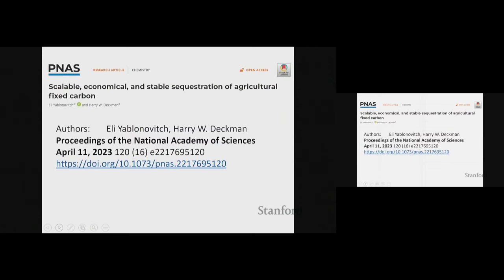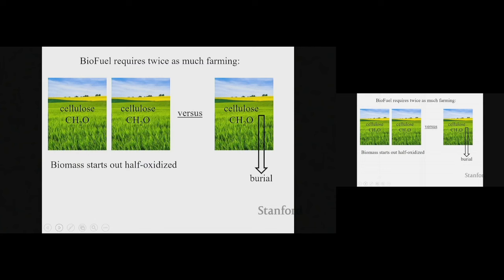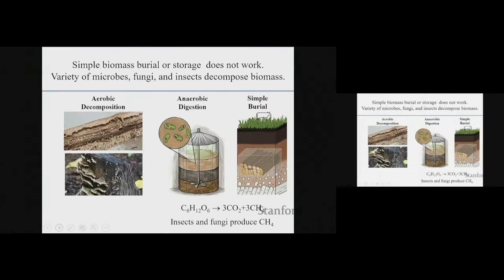We published this in an article — look up my name and my co-author Deckman. Now, we build on the knowledge gained from biofuel research. There's an issue in biofuels: you start with cellulose, and the biomass starts out half-oxidized. In order to turn this into fuel, you actually need to grow two acres of biomass to get one acre of fuel equivalent, because the carbon is already half oxidized. In contrast, just putting the biomass in the ground gives you full credit for the acre right away. So biofuel requires twice as much farming, but we learn a tremendous amount from biofuel research.